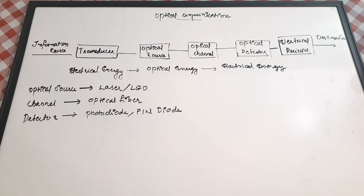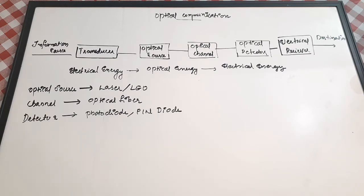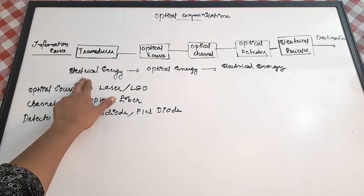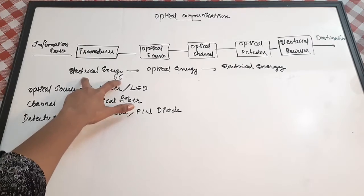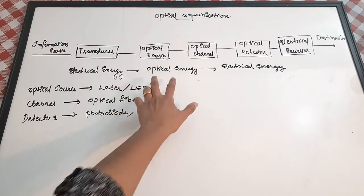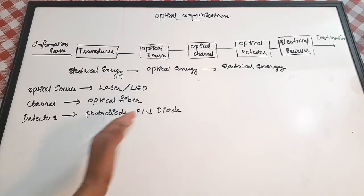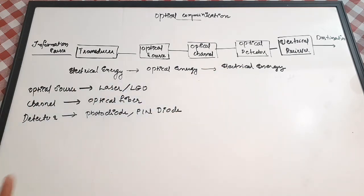In today's video we are going to see a very important subject: optical communication. We'll cover all major concepts of optical communication, including optical fibers, single-moded and multi-moded fibers, and their various characteristics. Optical communication means using light energy as a medium for transferring information. Electrical energy is converted into optical energy, transmitted, and then converted back to electrical energy at the receiver side.